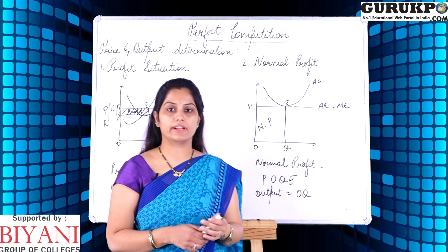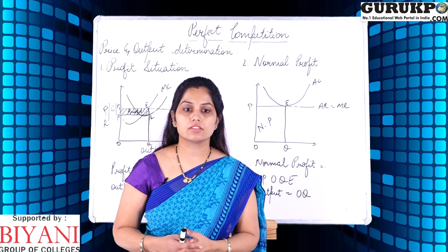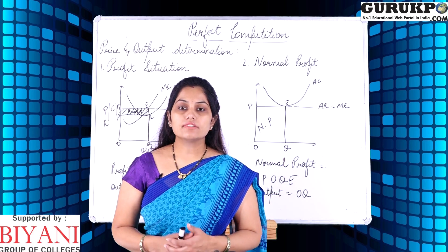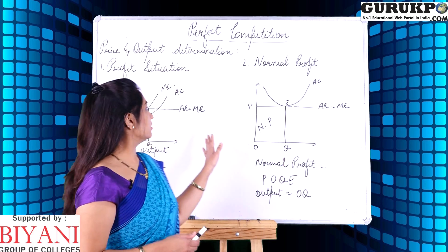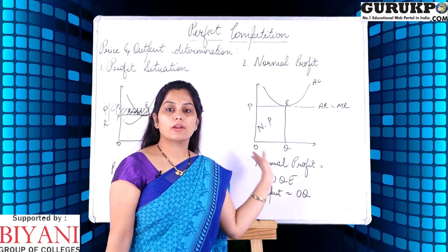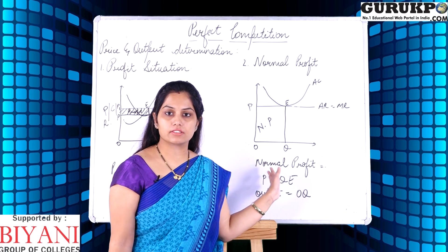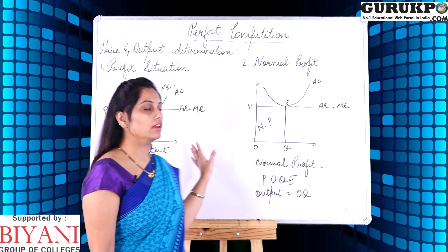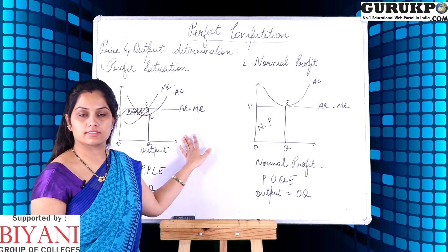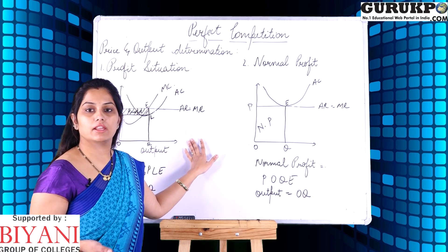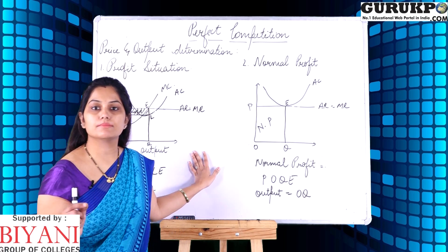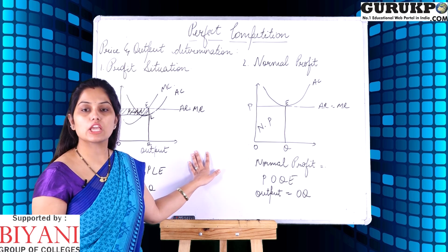We are going to discuss how price and output are determined under perfect competition. There are three situations we will discuss: super normal profit, normal profit, and loss. The point of equilibrium is where marginal revenue (MR) is equal to marginal cost (MC).